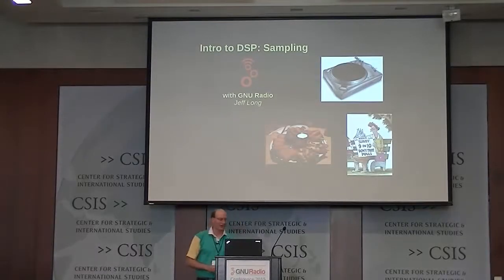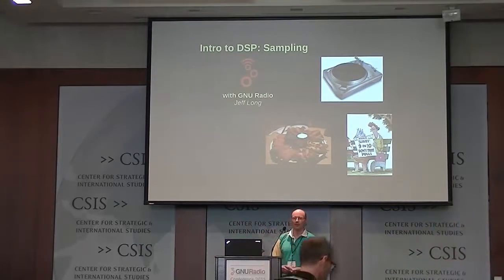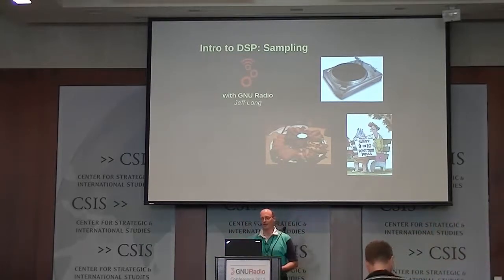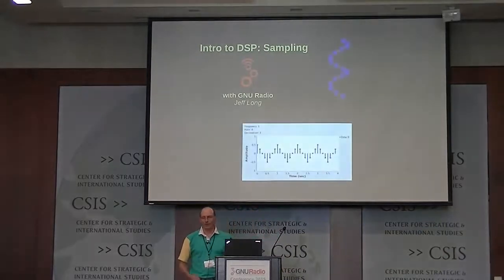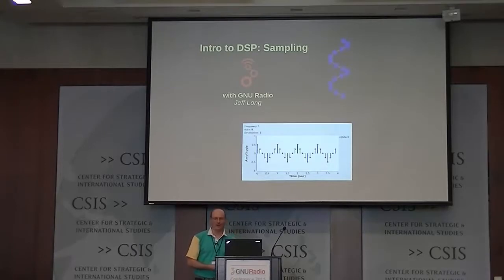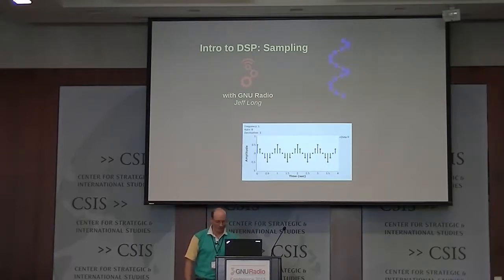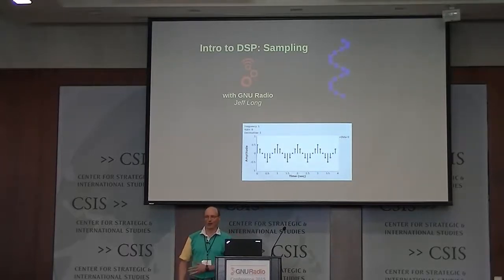So, what is sampling? Sampling is taking a small amount of something and using it to represent the whole thing, and that has some implications. You have to admit that you can't take the whole thing, you have to figure out what you do take, and then it has to be for a specific purpose. We're not trying to digitize the world and record it to a file — we're trying to do something specific.